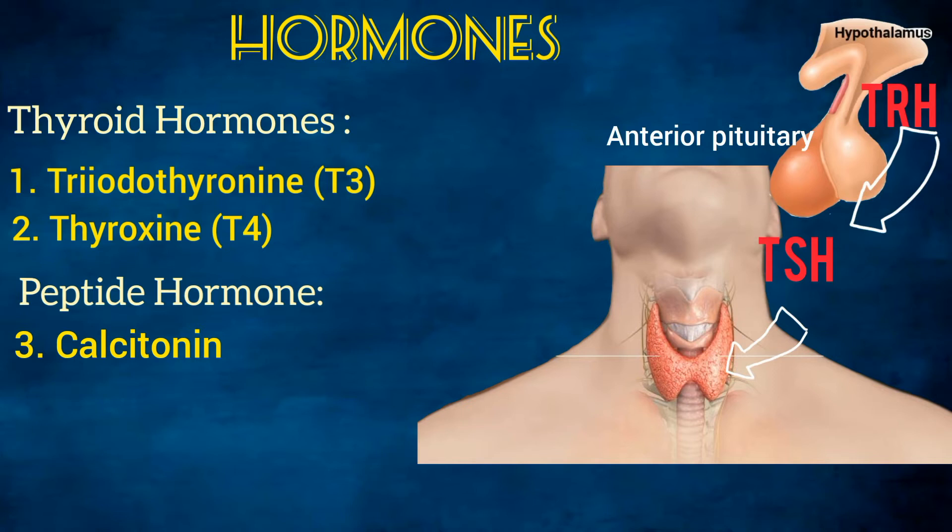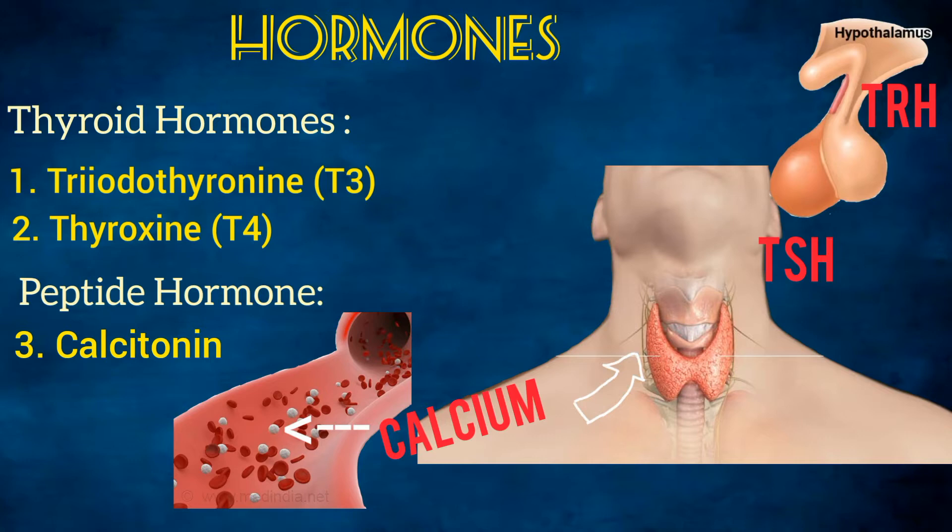Thyroid stimulating hormone is in turn induced by thyrotropin releasing hormone (TRH) produced by the hypothalamus. Calcitonin secretion, on the other hand, is stimulated by an increase in serum calcium concentration.